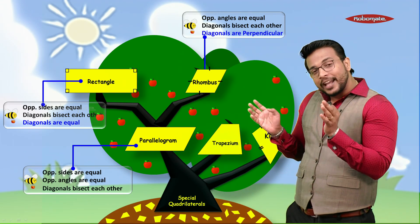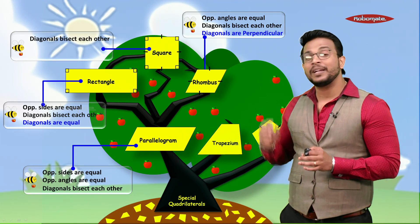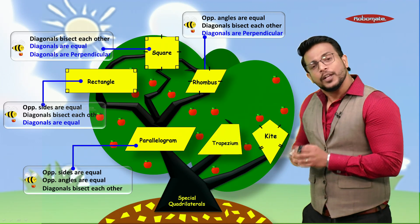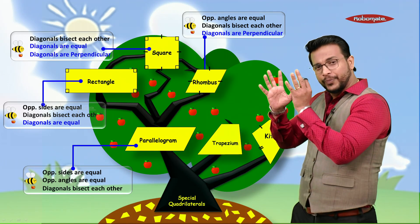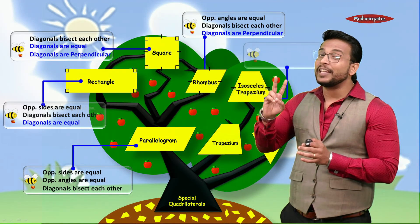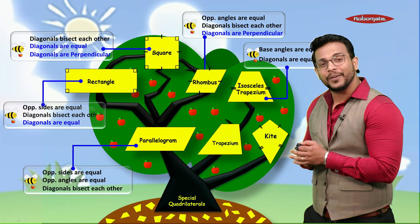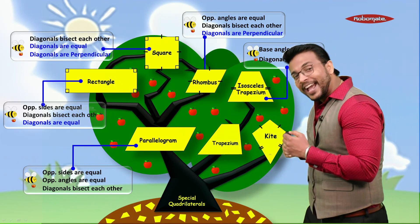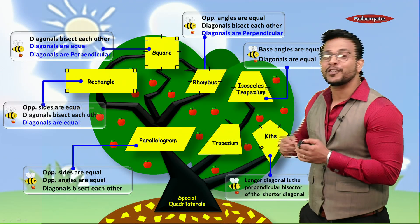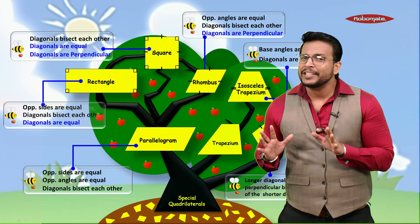From rectangle and rhombus we get the square, whose diagonal properties are: diagonals bisect each other, diagonals are equal, and diagonals are perpendicular. From trapezium, we get the isosceles trapezium, with properties: base angles are equal and diagonals are equal. Finally, the kite has one property: the longer diagonal is the perpendicular bisector of the shorter diagonal.